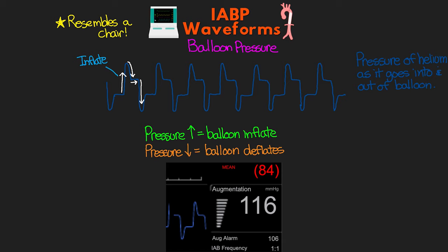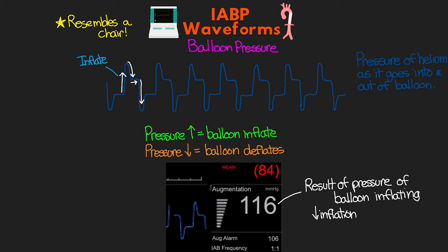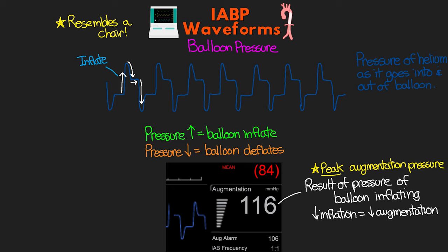The augmentation shown to the right on the display is a result of the pressure caused by our balloon inflating. If we decrease the amount of inflation — also known as augmentation — you would see the augmentation pressure shown in white decrease as well. This value only shows the peak augmentation pressure and really only changes over time as the highest peak pressure changes. This could be the result of us changing the augmentation on the console or from patient-specific physiologic factors. Generally, this number remains relatively stable when there are no changes.